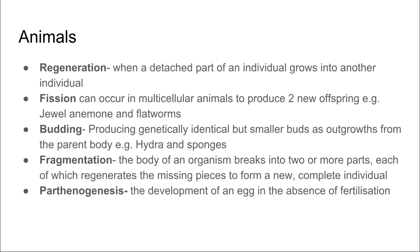In animals we see five asexual processes occur. Regeneration is when a detached part of an individual grows into another individual. Fission is when multicellular organisms produce two new offspring, seen in flatworms. Budding is when genetically identical smaller buds are produced, seen in hydra and some sponges. Fragmentation is when the body of an organism breaks into two or more parts, each of which regenerates the missing pieces to form a new complete individual.